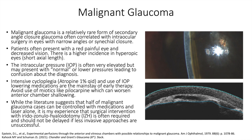On exam, patients often present with a red painful eye and decrease in vision. There is a higher incidence of malignant glaucoma in hyperopic eyes with short axial length. The intraocular pressure is often very elevated, but may present with normal or lower pressures, leading to confusion about the diagnosis. Key to diagnosis is a flat chamber with both iris and lens positioned anteriorly and almost a flat anterior chamber. The cornea shows signs of edema from both the elevated IOP as well as iris and lens touch, and this should be distinguished from any post-operative swelling of the cornea.